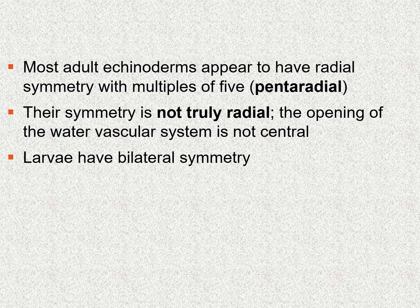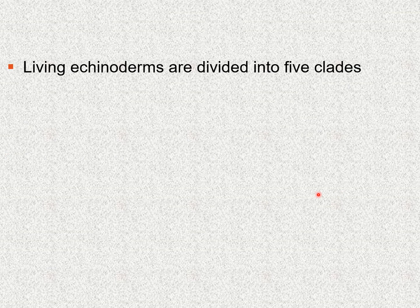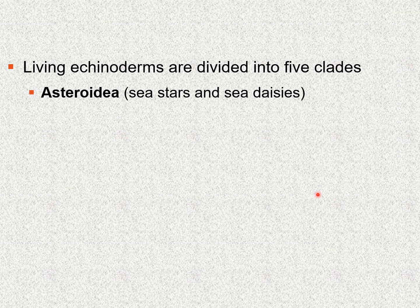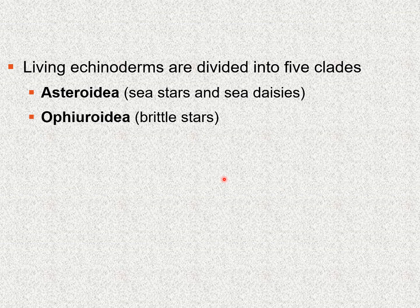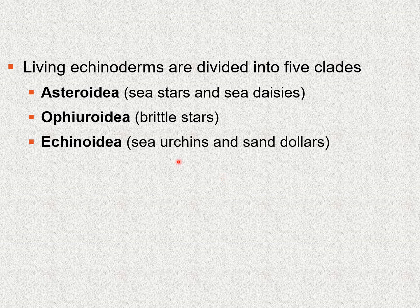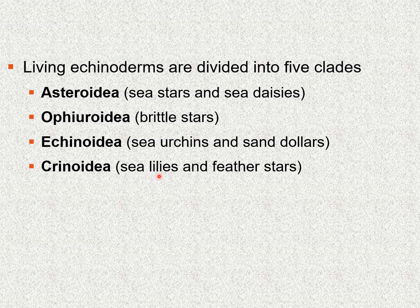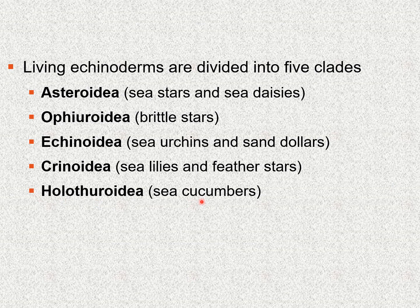The larvae also have bilaterian symmetry. The living echinoderms are divided into five clades: Asteroidea, which include the sea stars and sea daisies; Ophiuroidea, which include the brittle stars; Echinoidea, which include the sea urchins and sand dollars; Crinoidea, which include the sea lilies and feather stars; and finally Holothuroidea, which include the sea cucumbers — a unique set of organisms.